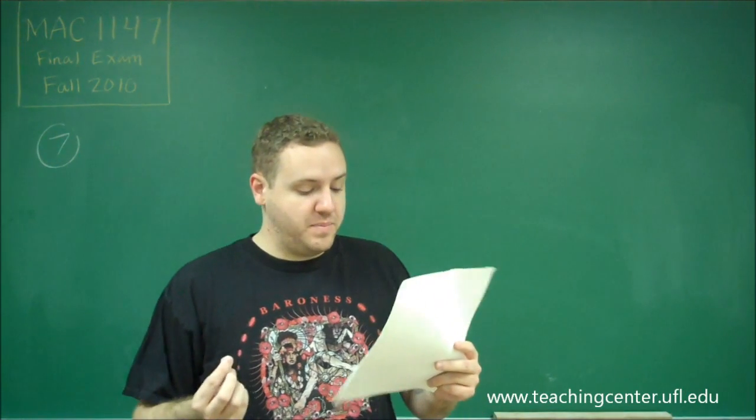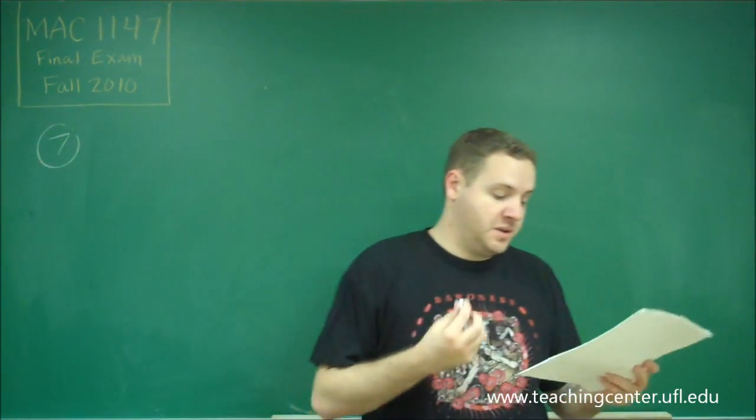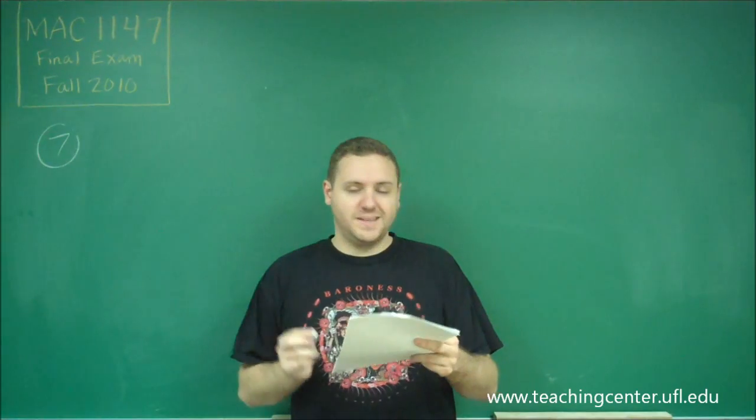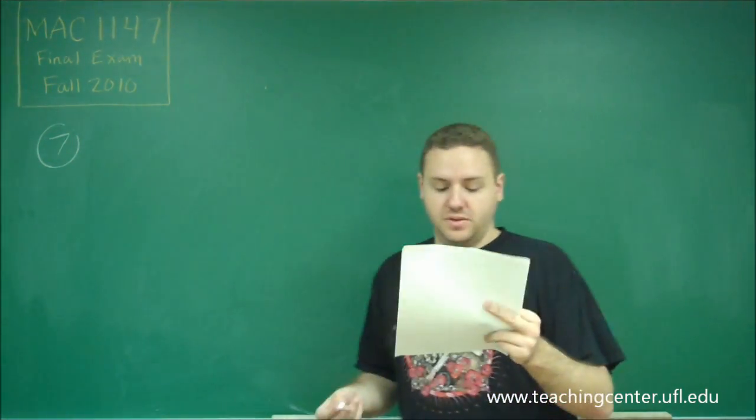Okay, so for number seven, we need to find the period of a function, and this one's going to look a little bit strange at first because we have both sines and cosines multiplied together in this function.